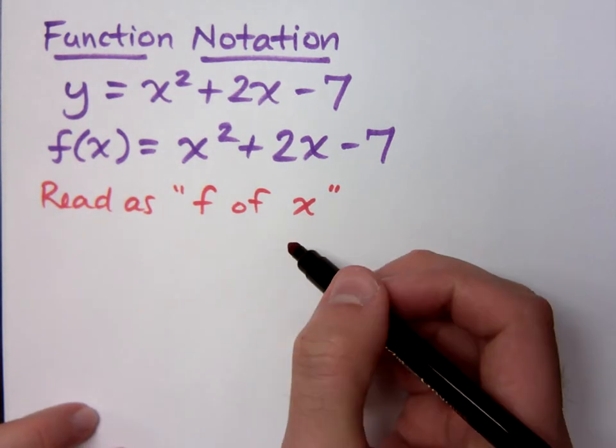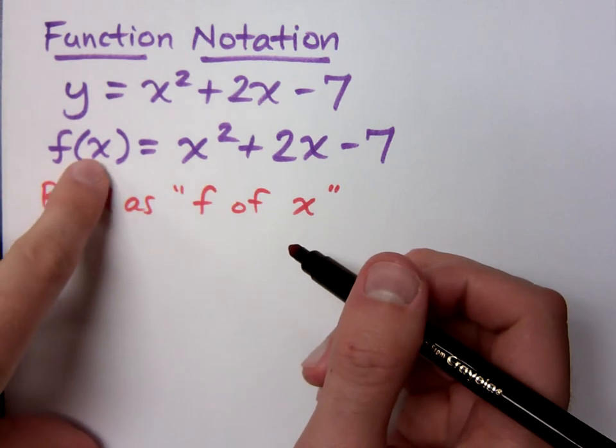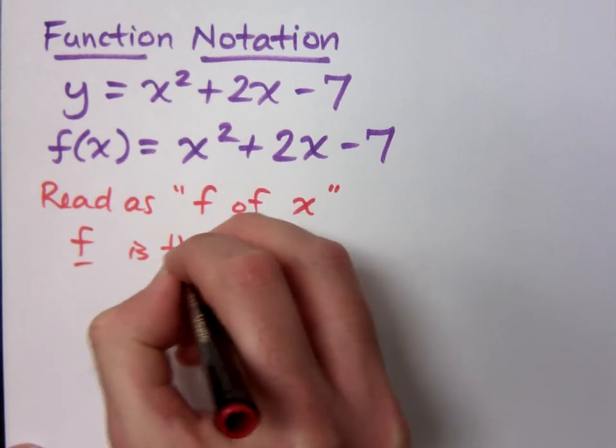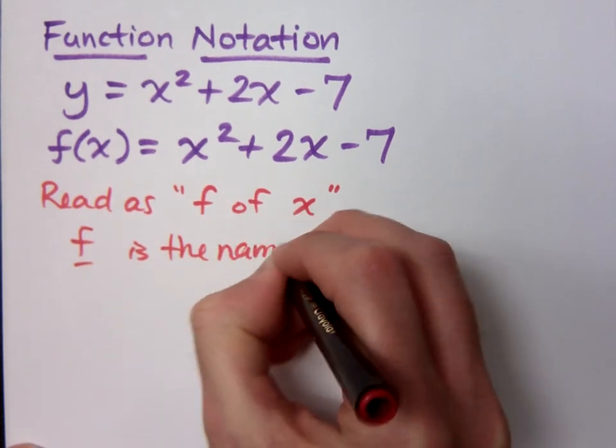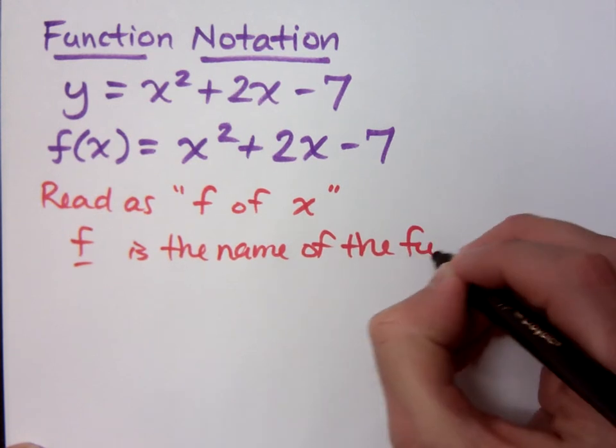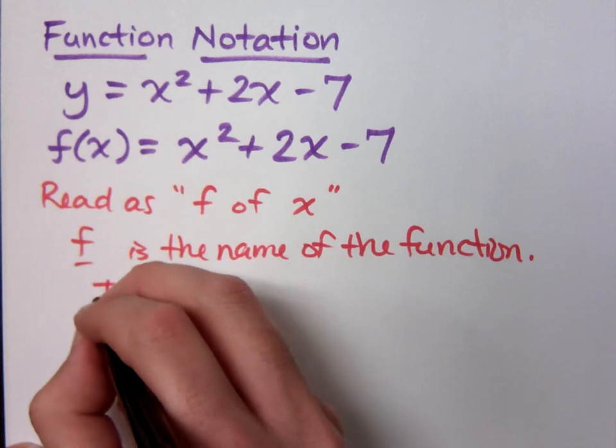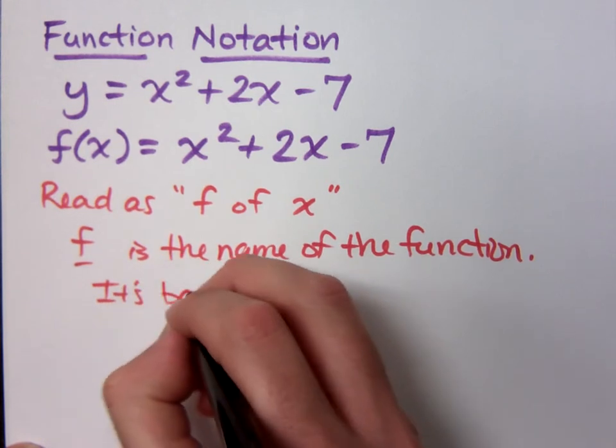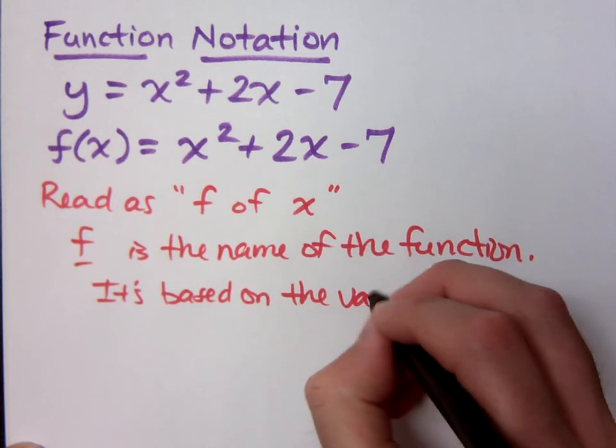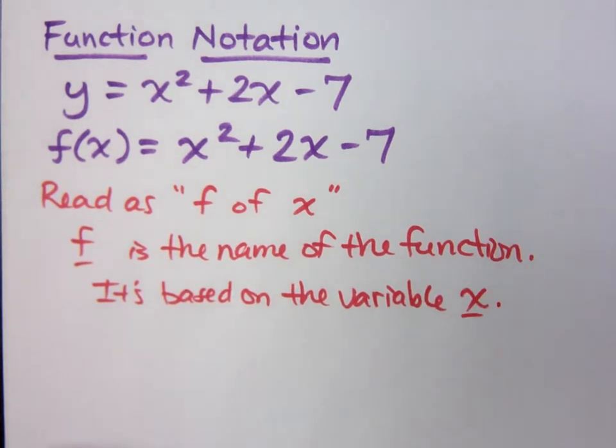f of x is the same thing as saying y. This tells me I have a function that's in terms of the variable x. f is the name of the function, and it's based on the variable x. That's why we say f of x.